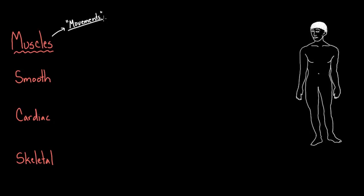Think about all the different movements you might have. For example, let's say your leg is moving because you're playing soccer. You've got this giant muscle in here, and this muscle is attached to a bone — the largest bone in the body, called the femur. This muscle is attached to the femur by way of tendons on both sides, and the tendon attaches it to the bone and allows it to act on the bone.